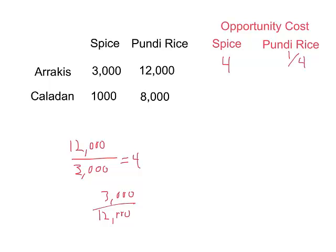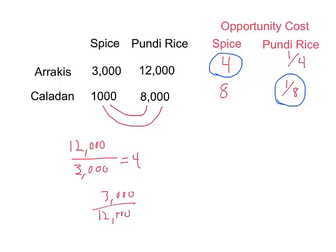Following the same process for Caladan, we get 8 pundi rice per spice — 8 of this per this. And for pundi rice, it's going to be 1 over 8 — 1 spice for every 8 pundi rice. When it comes to the cost of making something, you want that number to be low, so whoever has the comparative advantage has the lower opportunity cost. For spice, that's Arrakis — they only give up 4 bushels of pundi rice per bushel of spice, whereas Caladan has to give up 8. On the other hand, Caladan has a comparative advantage in pundi rice — they only give up one-eighth of a bushel of spice per bushel of pundi rice, whereas Arrakis has to give up twice that much.